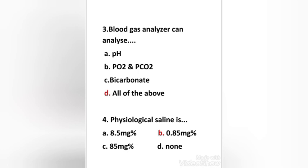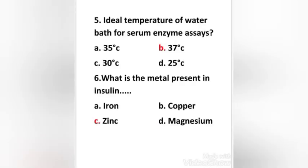Ideal temperature of water bath for serum enzyme assays: 35°C, 37°C, 30°C, 25°C. Right answer is option B: 37°C. What is the metal present in insulin? Iron, copper, zinc, magnesium. Right answer is option C: zinc.